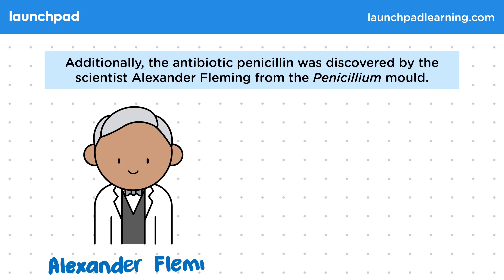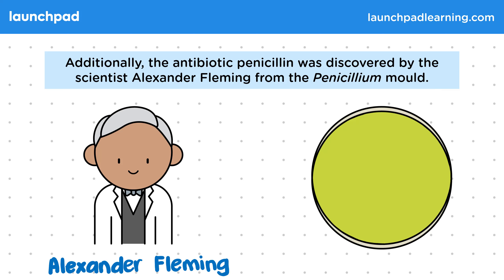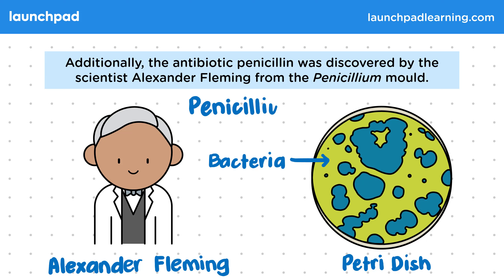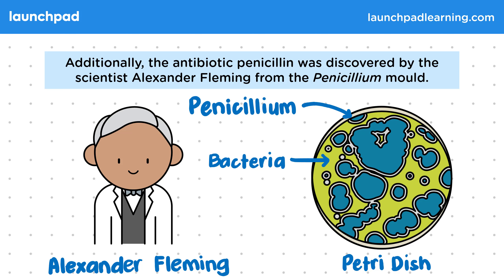This is Alexander Fleming. Fleming was studying a bacterium, shown by the green colour on the petri dish. Having left a petri dish open, it became contaminated with the penicillium mould, shown by the blue parts on this image. Fleming noticed that there was no bacteria growing around the mould, shown by the pale areas. He then went on to isolate the antibiotic penicillin.